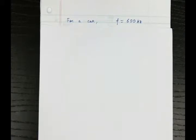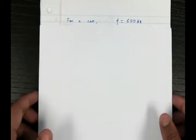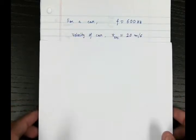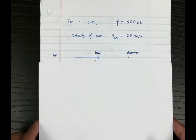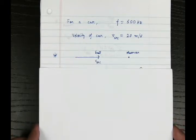We'll take an example for a moving source. Let's say we have a car with a siren for which the frequency when the car is stationary is 600 Hertz. The car is moving at a velocity of 20 meters per second towards the east.